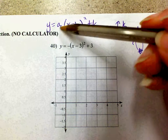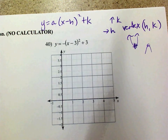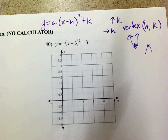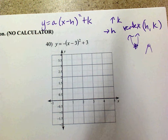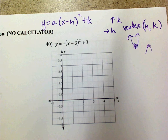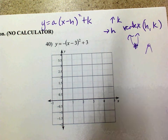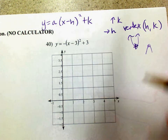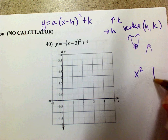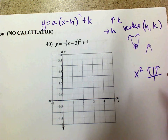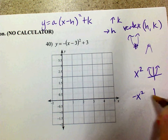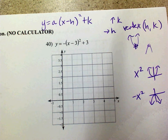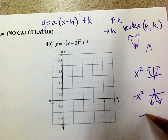The 'a' is a vertical stretch or compression. If there's a number in the front bigger than 1, it's a vertical stretch by that factor. If it's a fraction between 0 and 1, that's a vertical compression — it makes it wider. Also as a reminder: if I graph x squared it opens up, but if I graph negative x squared it faces down. So a negative reflects over the x-axis.